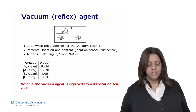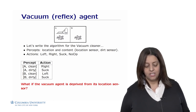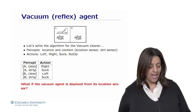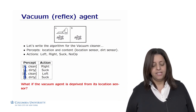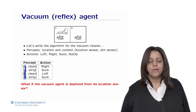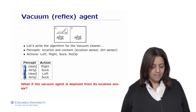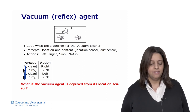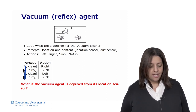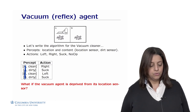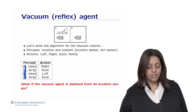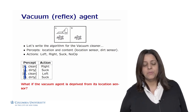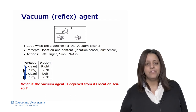One question is what happens if the vacuum agent is deprived of its location sensor. Without location information, we only know whether it's clean or dirty. If it's clean, we don't know whether to go right or left because we don't know which room we're in. This is the problem with reflex agents in a partially observable environment — they get stuck.